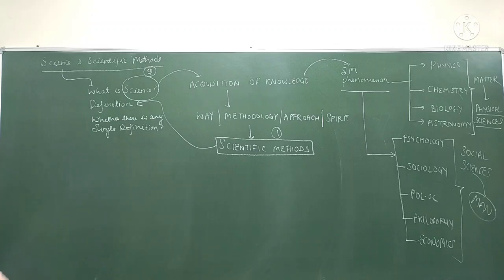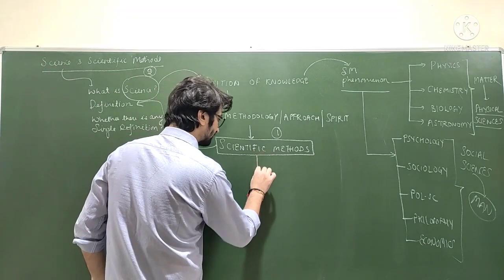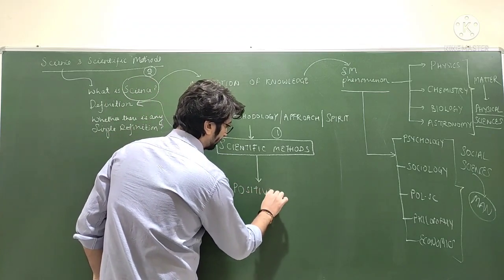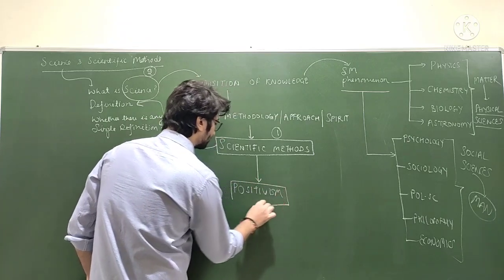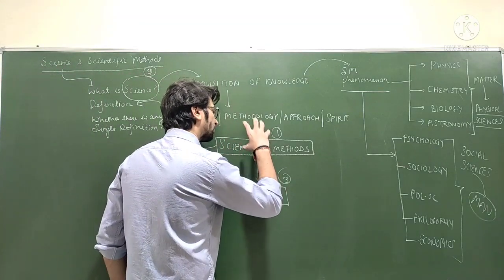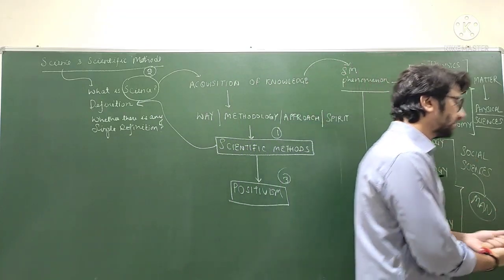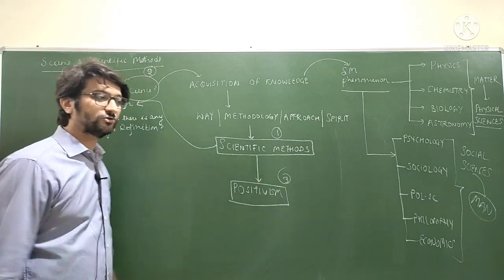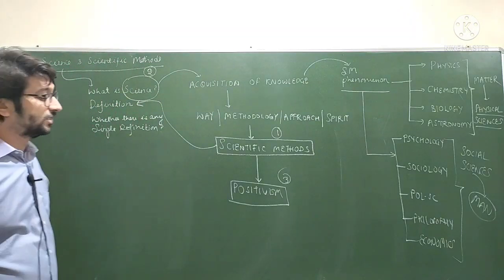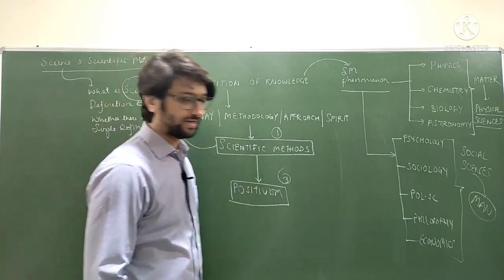Once we have studied the scientific method, we will study science, and the third step will be studying positivism and positivistic methodology. The positivists — sociologists like Auguste Comte and Herbert Spencer — were advocating for the use of scientific methods in sociology to study various social problems. Once we have studied the scientific method, we will study what positivism is.